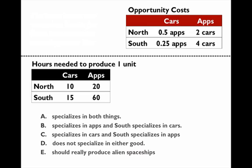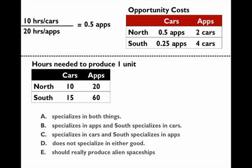To calculate the opportunity cost, if you're trying to calculate the opportunity cost of producing cars for North — it takes North 10 hours to produce a car and 20 hours to produce an app — so they will be giving up half an app in order to produce a car. The opportunity costs of the two goods within the same country are reciprocals of each other, so if the opportunity cost of producing cars for North is half an app, then the opportunity cost of an app is 1 over 0.5, which is two cars.